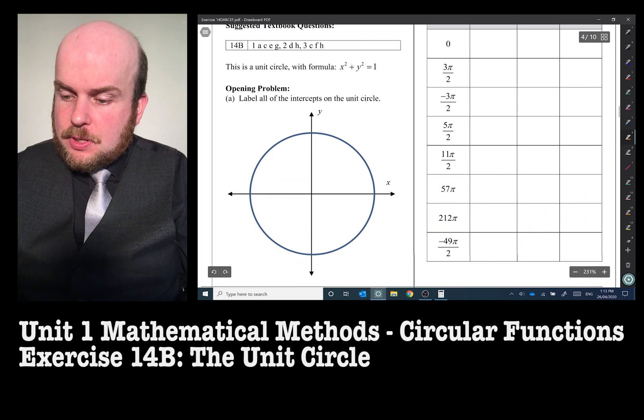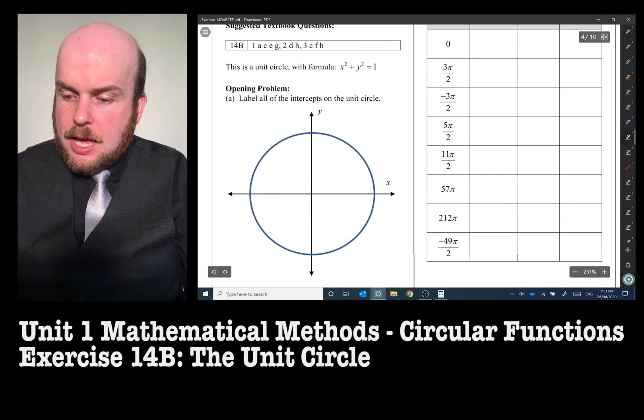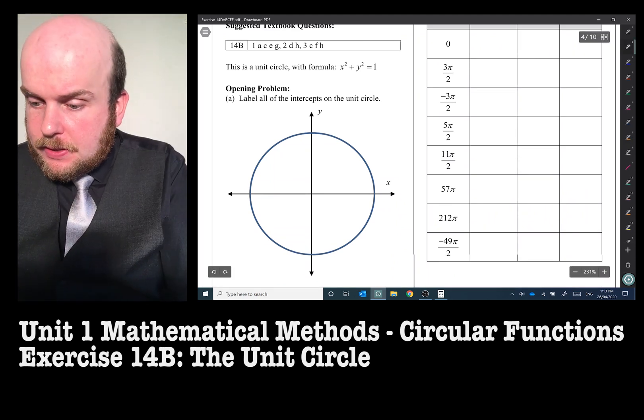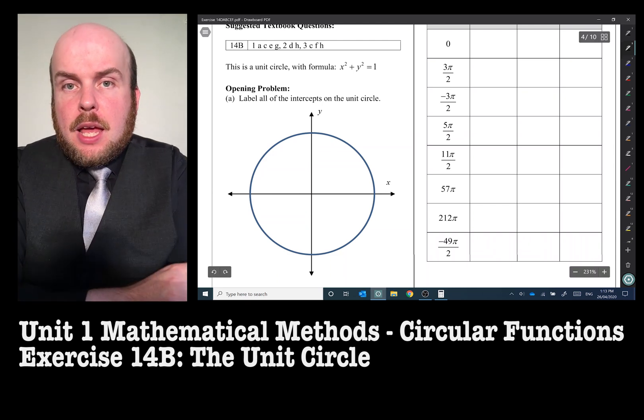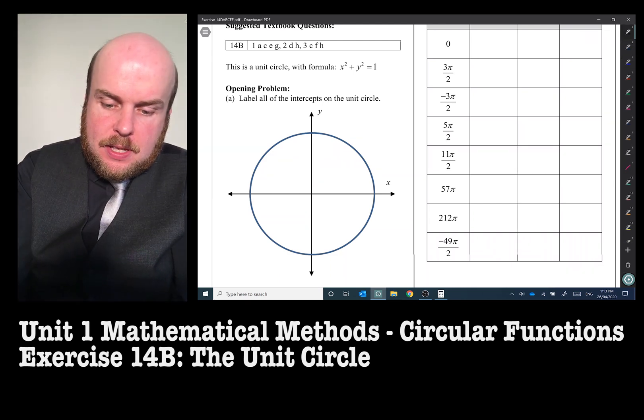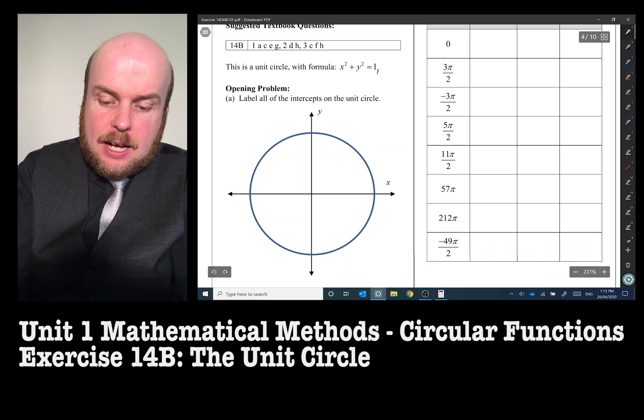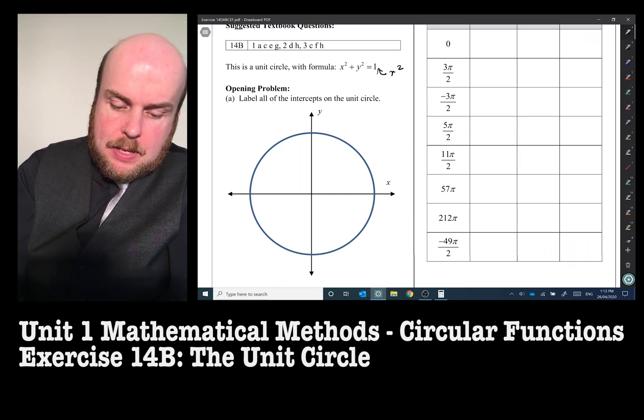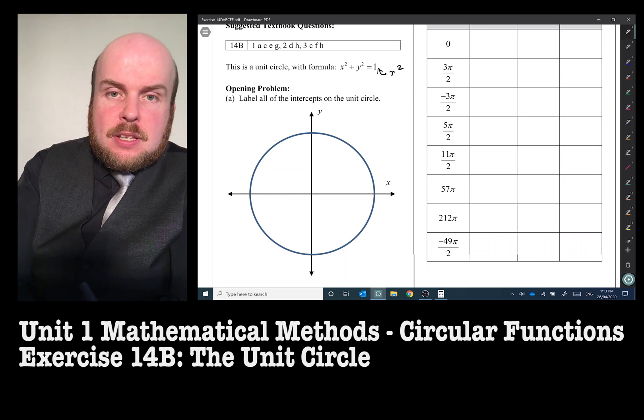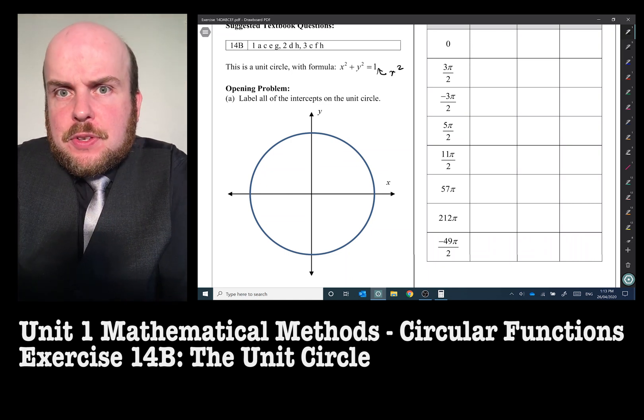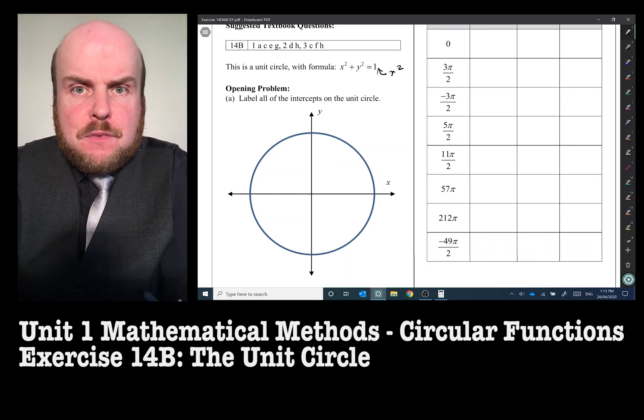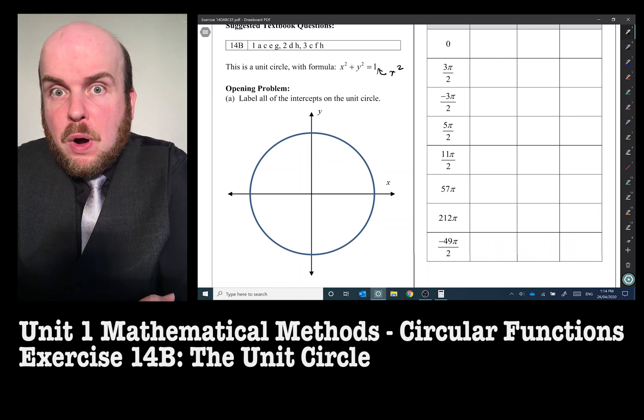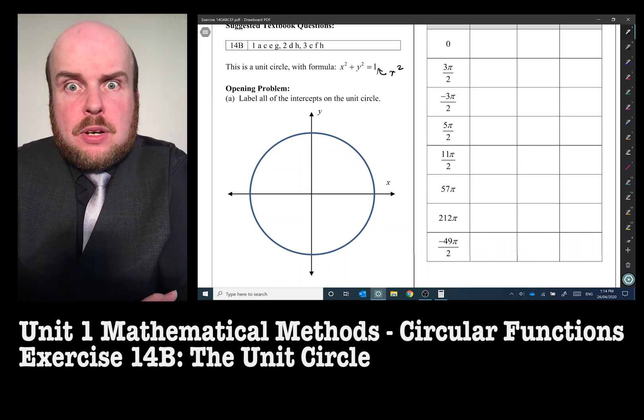has the formula x squared plus y squared equals 1. Well, this unit circle, as we remember from our previous topics, has a radius of 1, because this value here is r squared, and the square root of 1 is 1. So therefore, each of these extremities of the circle are all going to be some version of 1 or 0, 1 or 1, 0.